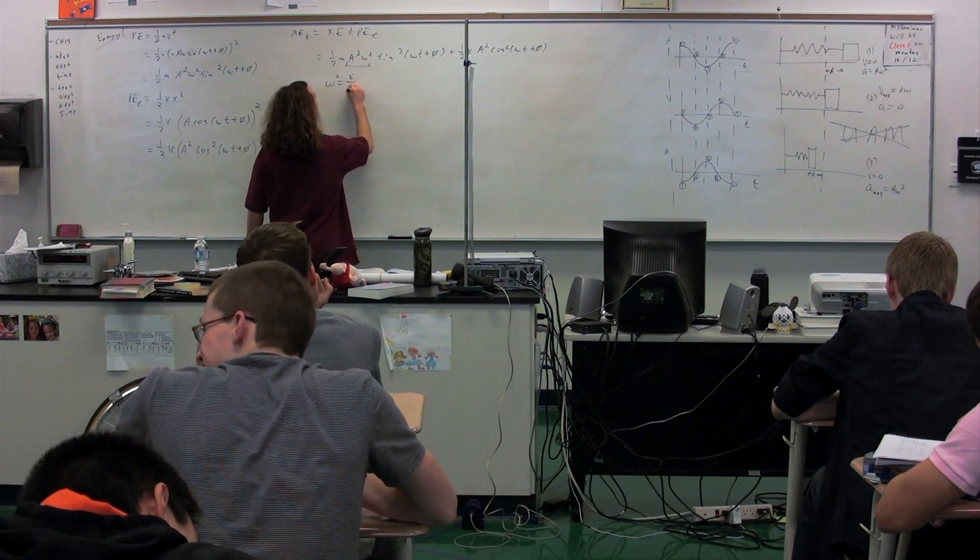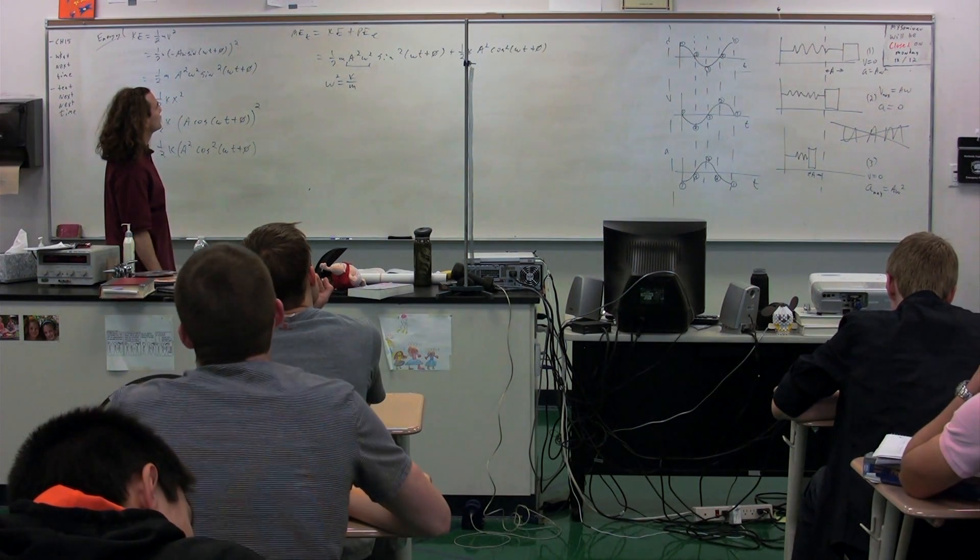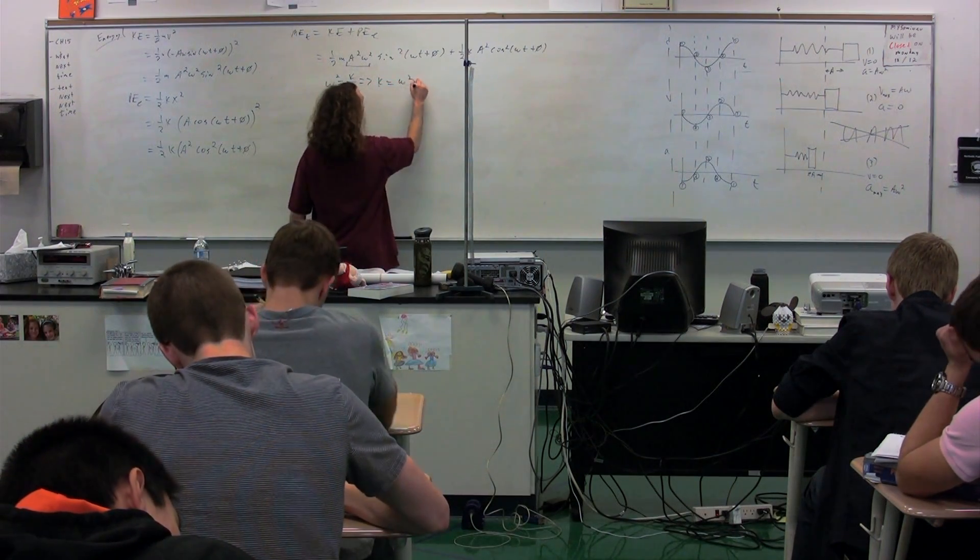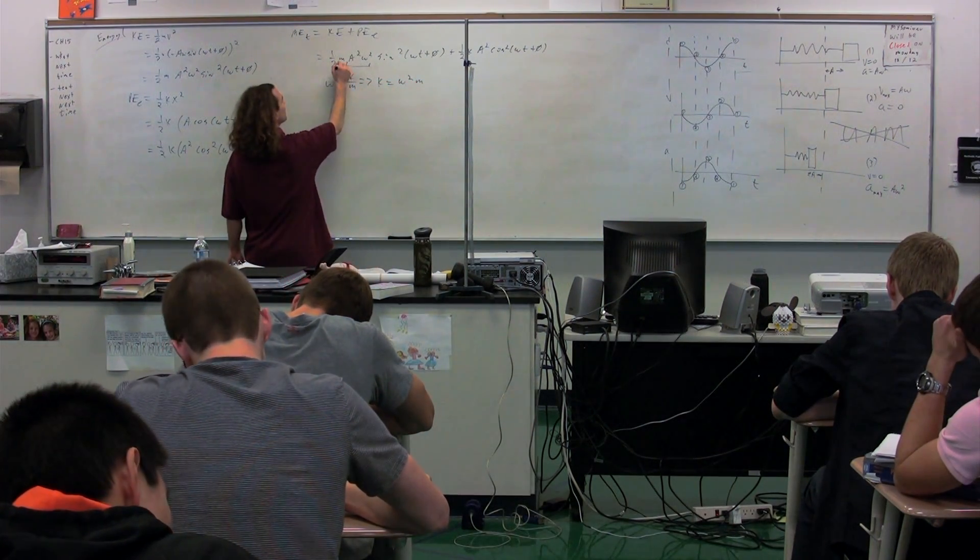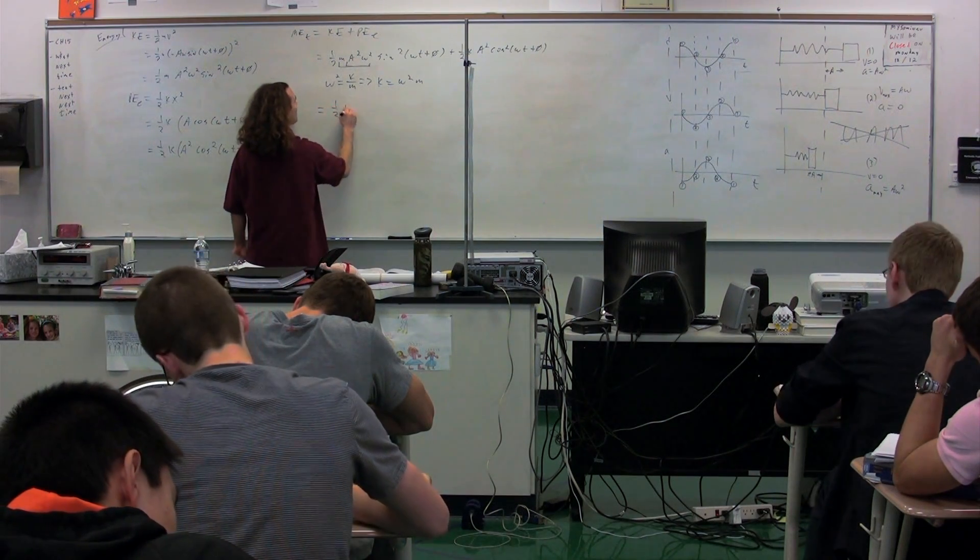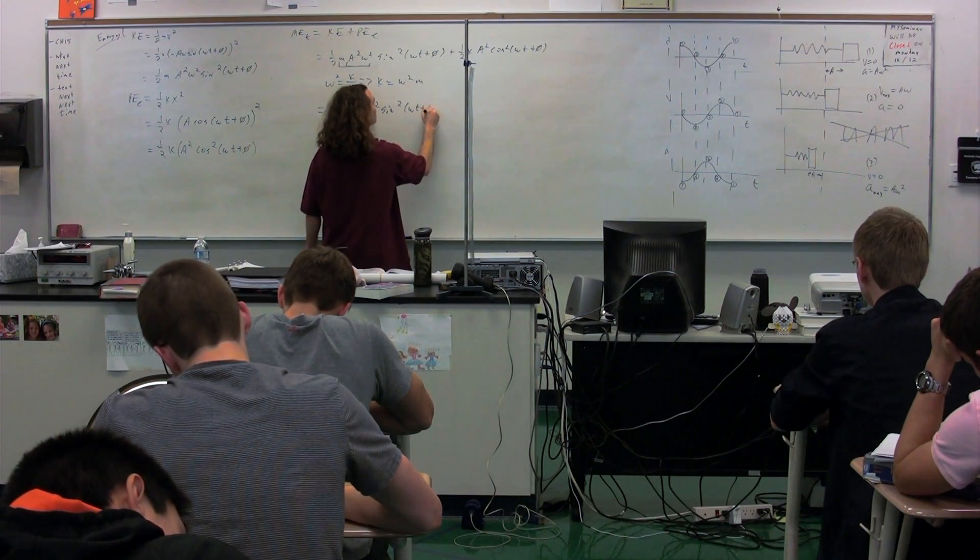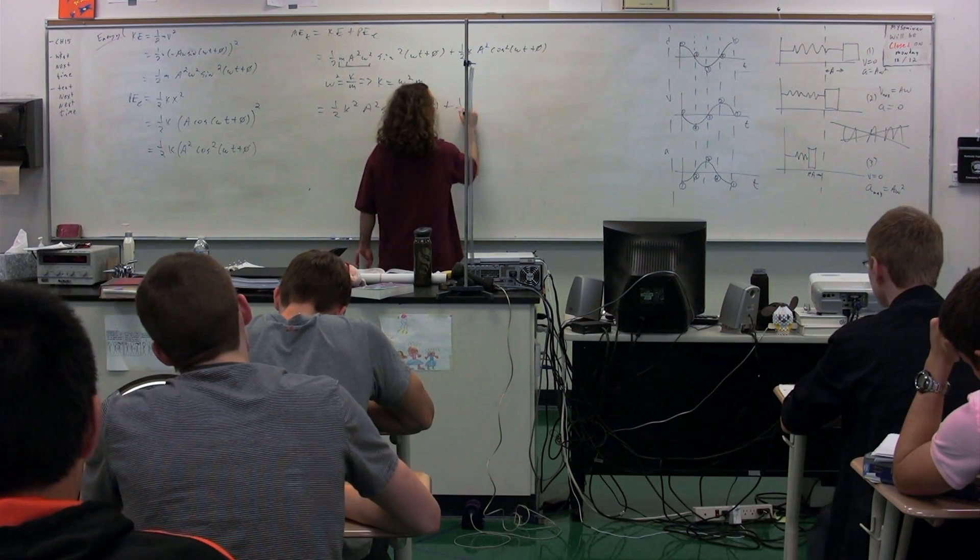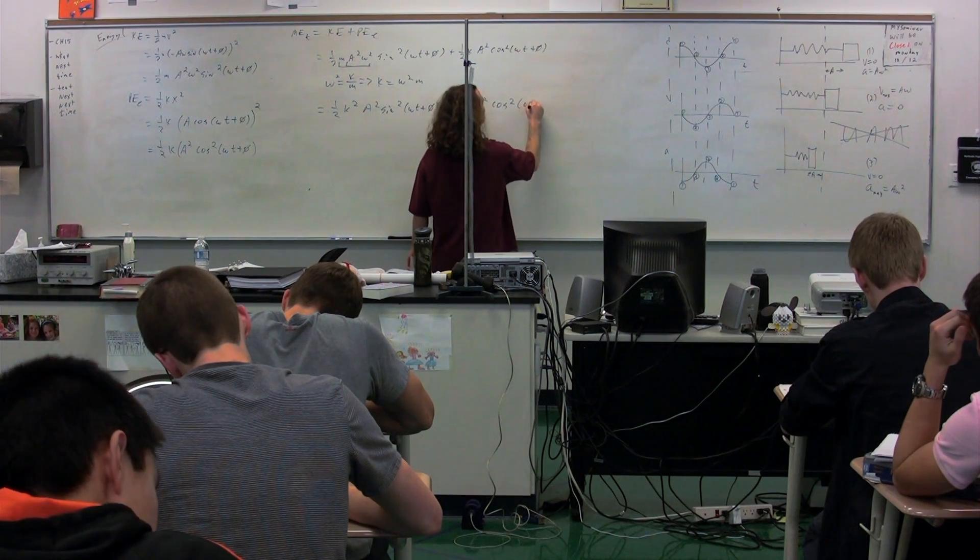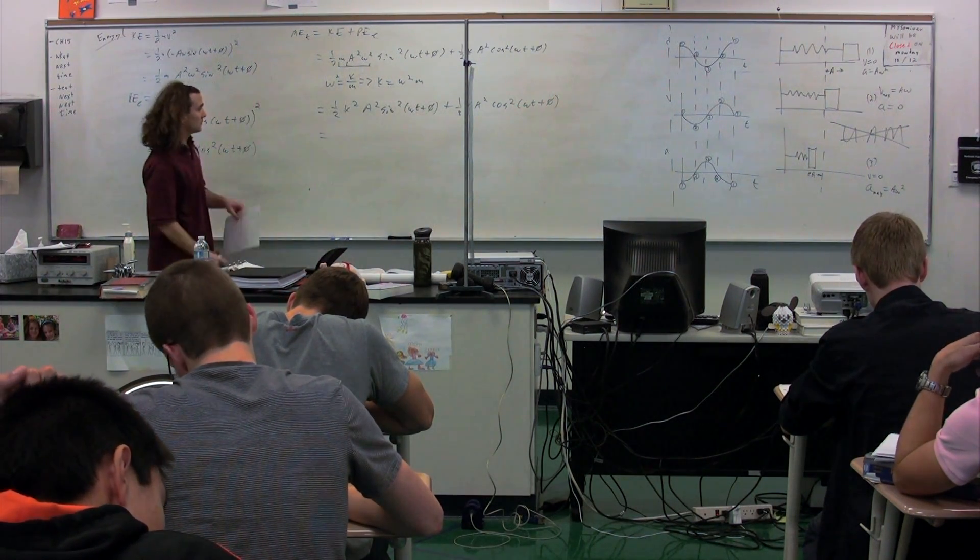So k is equal to omega squared times m. So we can substitute for omega squared times m in this equation. So it's one-half times k times A squared times sine squared of omega t plus phi, plus one-half times k times A squared times the cosine squared of omega t plus phi.